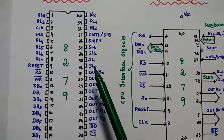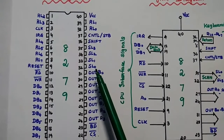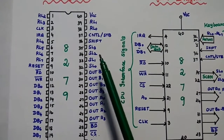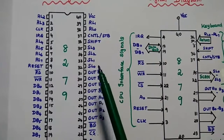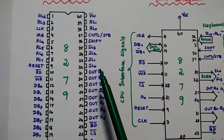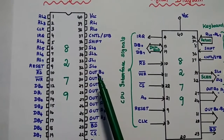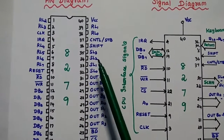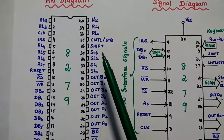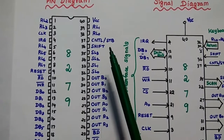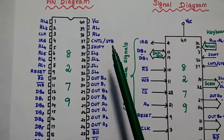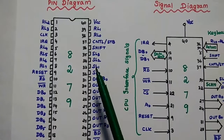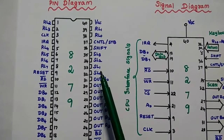Next are the scan lines: SL0, SL1, SL2, and SL3. There are 4 scan lines used for keyboard interfacing. Then there are SHIFT and CTRL/STROBE — these two are the control signals for this keyboard and display.